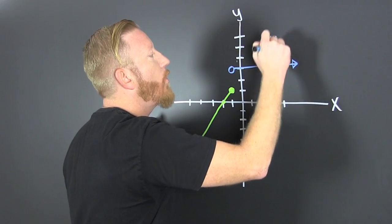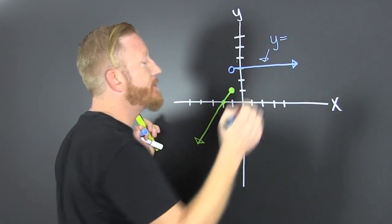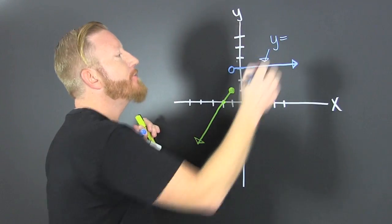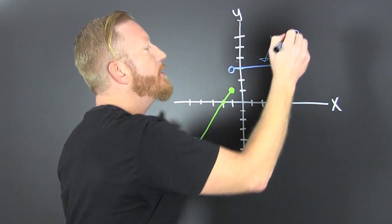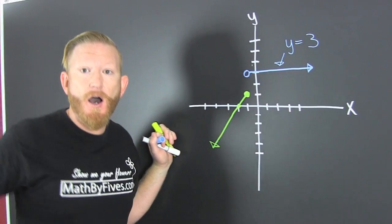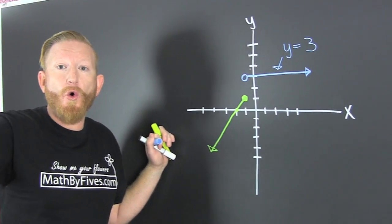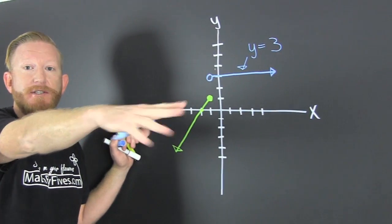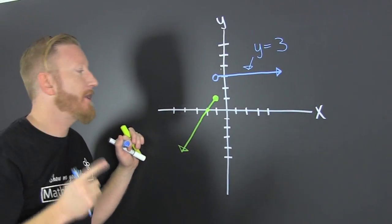This piece — boom — that's y is equal to three, because it's a horizontal line.